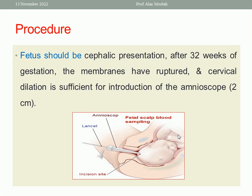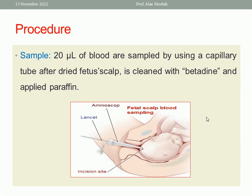If more than two centimeters, it is easier, but at least two centimeters — because I need to introduce this cone, the amnioscope, and through it I can pass the lancet to do the incision and take the sample with the capillary tube. This is the prerequisite to do fetal scalp blood sampling.